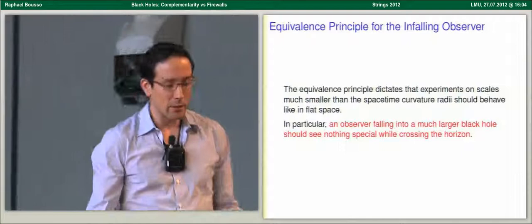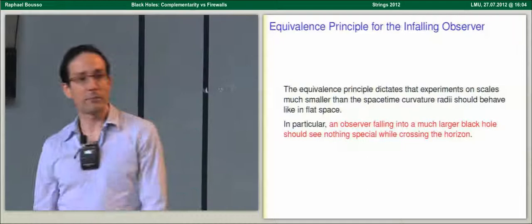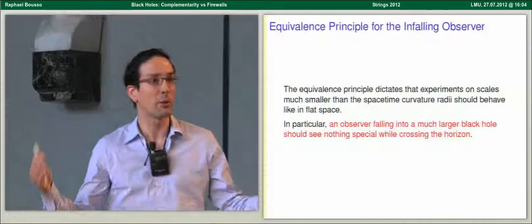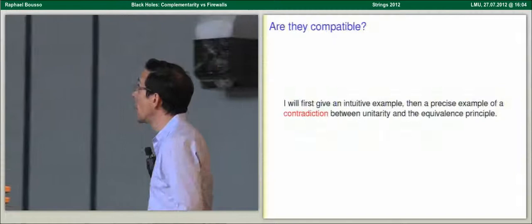From the particle physicist's perspective, this is a scattering experiment — stuff comes back out; why should it matter whether there was a black hole as an intermediate state? To a relativist things are more confusing, because the equivalence principle dictates that experiments on scales much shorter than the horizon experience nothing special. An infalling observer should observe the same things they would see in flat space. This could be a black hole a billion light years across — we could be crossing it right now and not know it.